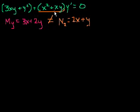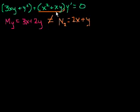In the last video, we had this differential equation, and it at least looked like it could be exact. But when we took the partial derivative of this expression, which we could call M, with respect to y, it was different than the partial derivative of this expression — which is N in the exact differential equations world — with respect to x. It was not exact. But we said, what if we could multiply both sides of this equation by some function that would make it exact?